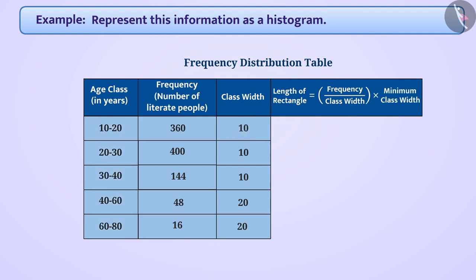Thus, the length of the rectangle for the age group 10 to 20 will be 360 divided by 10 multiplied by 10 is equal to 360. Since the class width of the class interval 10 to 20 is already 10, therefore, there was no change in the length of its rectangle.